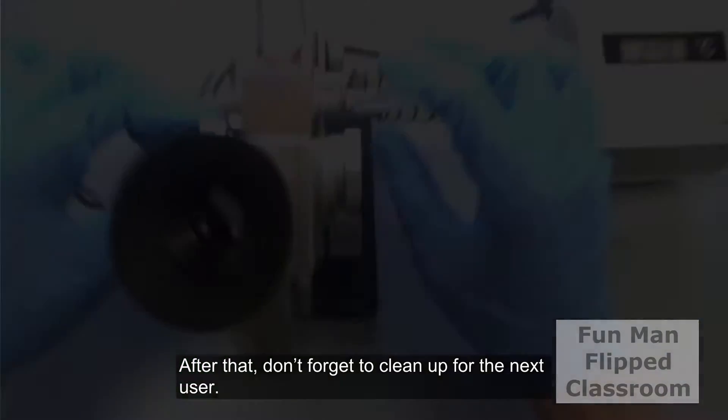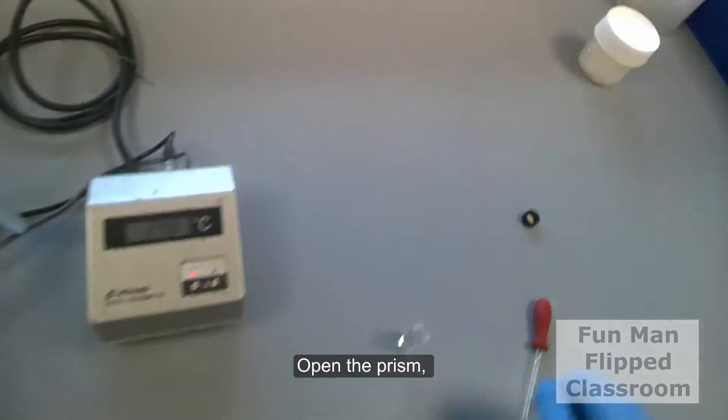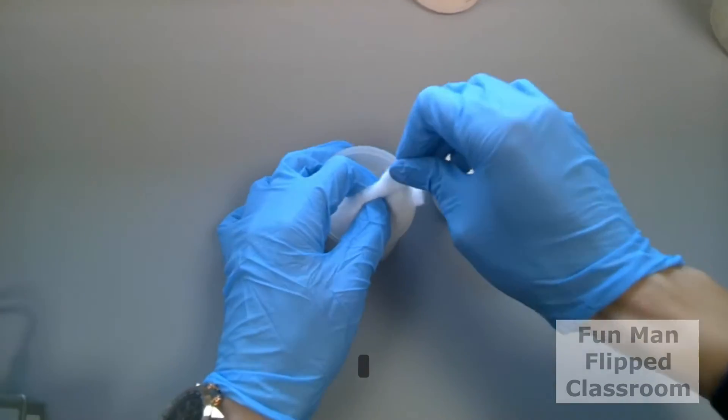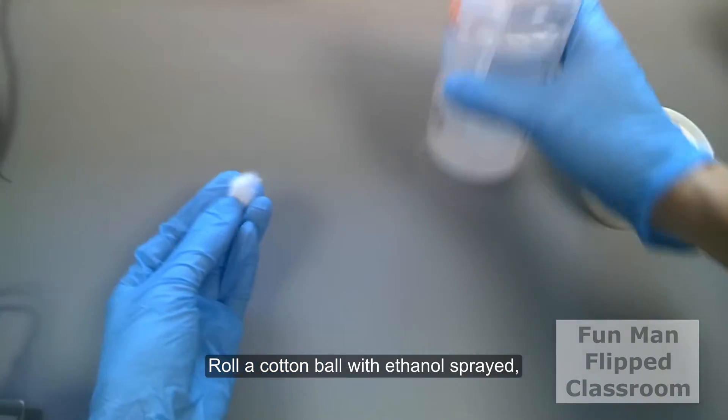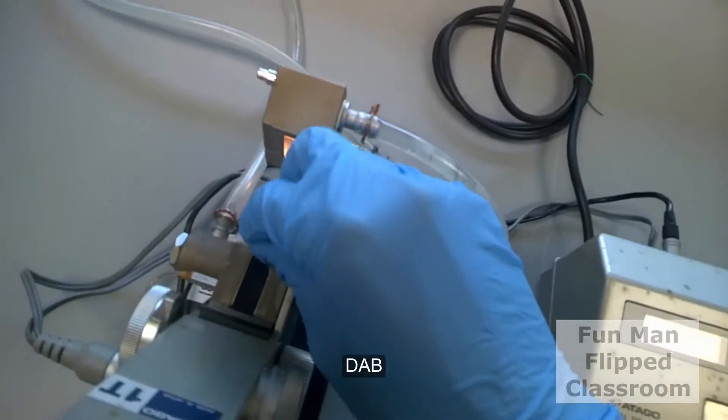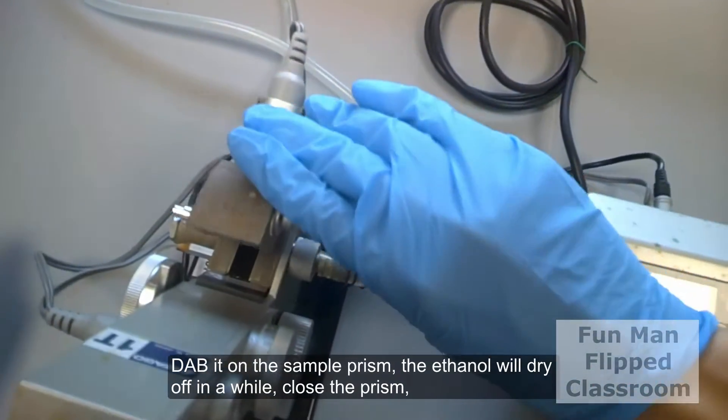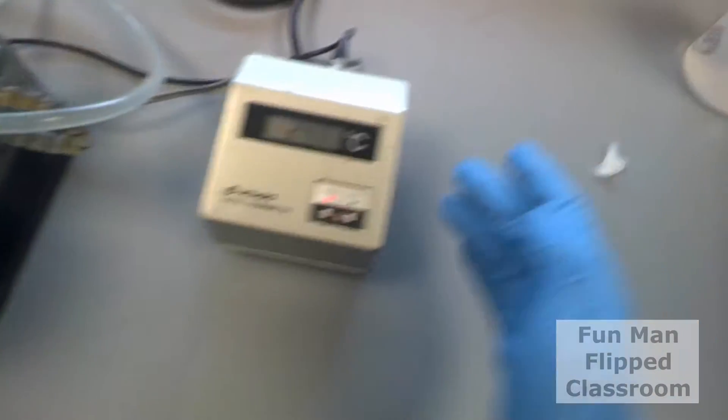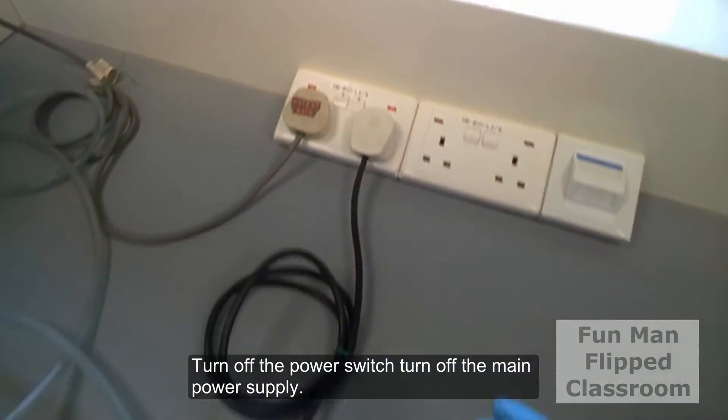After that, don't forget to clean up for the next user. Open the prism. Roll a cotton ball with ethanol spray. Dab it onto the sample prism. The alcohol will dry off in a while, and close the prism. Turn off the power switches and turn off the main power supply.